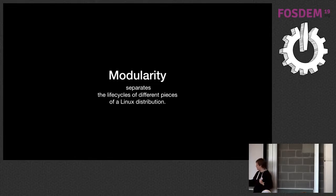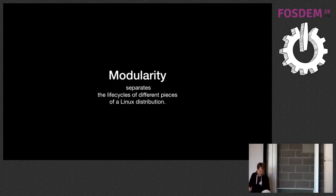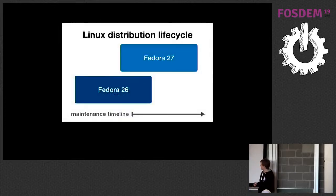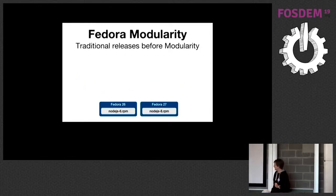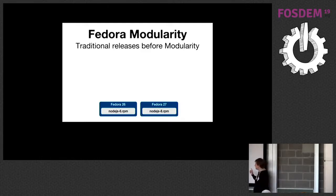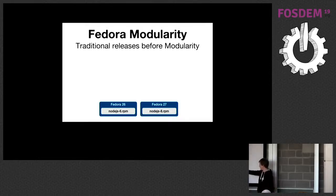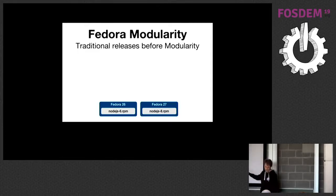We care about life cycles, maintainability, stability, and sometimes commercial support. Here's a simplified view of Fedora with just a Node.js package: in Fedora 26 and 27 there are quite old versions — Node.js 6 and Node.js 8 — nothing else.